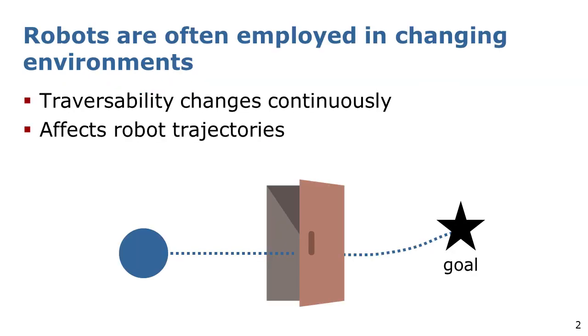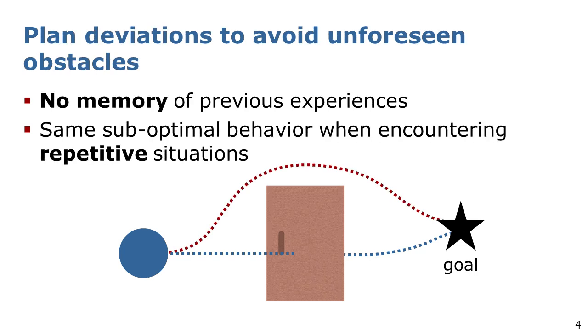Mobile robots are often employed in environments such as offices or hospitals where the traversability changes continuously, affecting the trajectories along which a robot navigates. Traditional approaches deal with unforeseen obstacles by planning local deviations. However, such approaches have no memory. Therefore, when a robot encounters repetitive situations, it might execute every time the same suboptimal behavior.